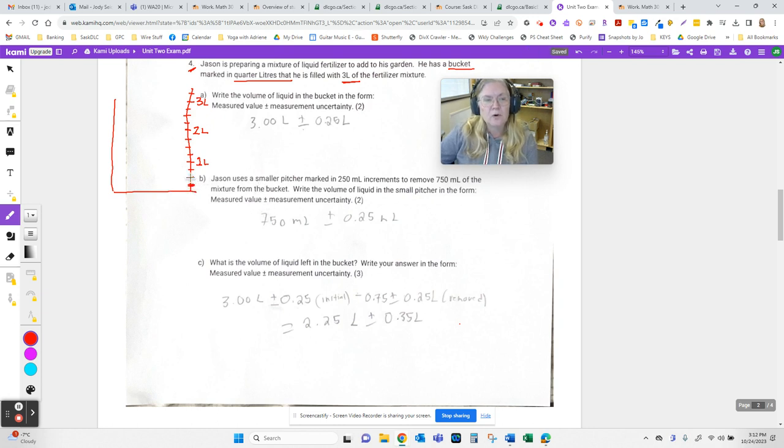So this for instance is a quarter of a liter, two quarters, three quarters, and there's a liter and so on up the pail, which tells us that precision is a quarter of a liter.